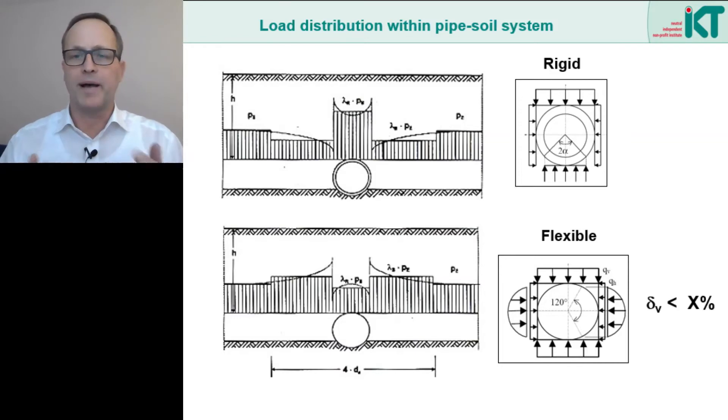When do we call a pipe a flexible pipe? In the static calculations, a basic distinction is made between two kinds of pipes or pipe soil systems. First, there are rigid pipes as shown in the picture above. Here most loads go into the pipe, the soil next to the pipe is softer than the pipe and takes considerably less load.